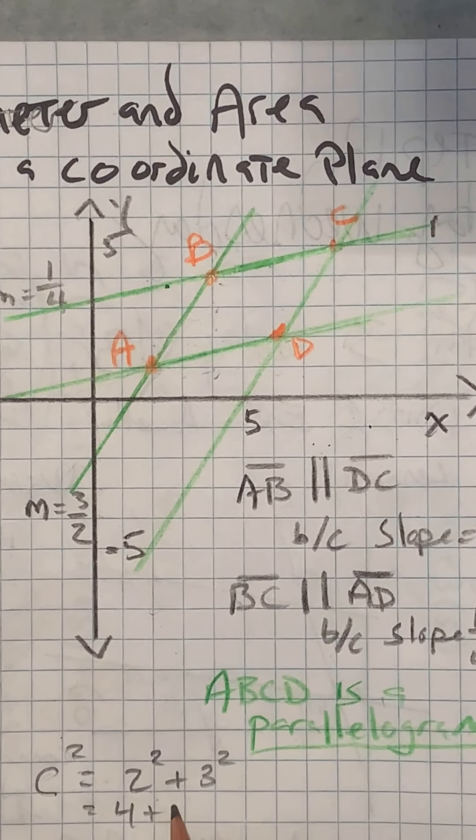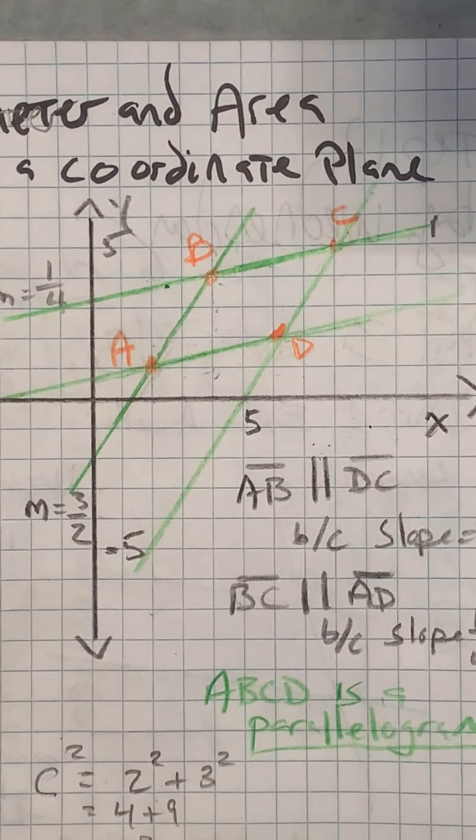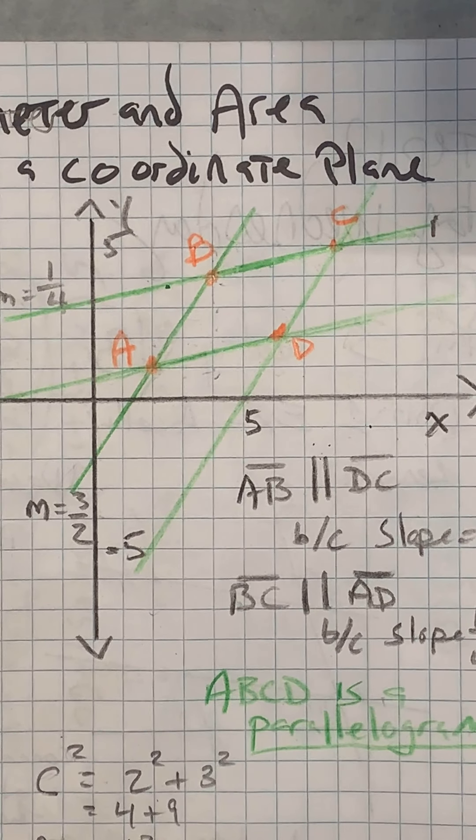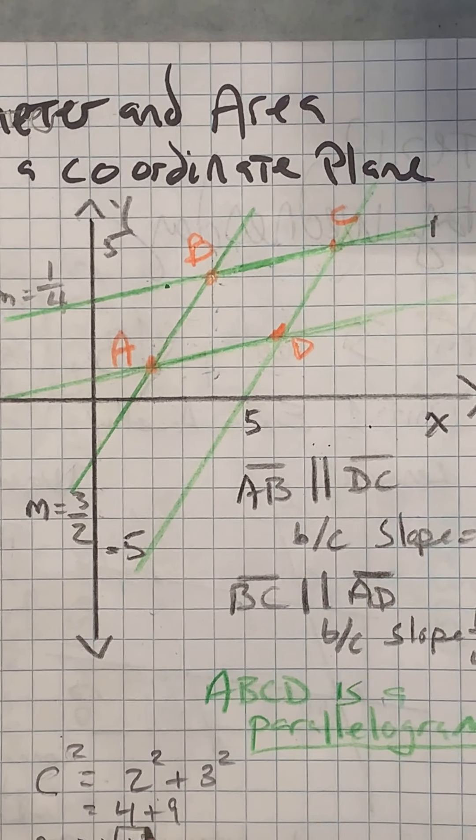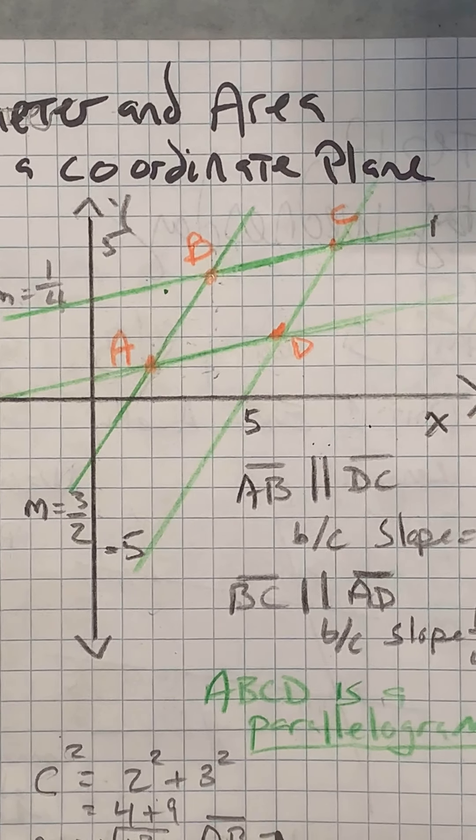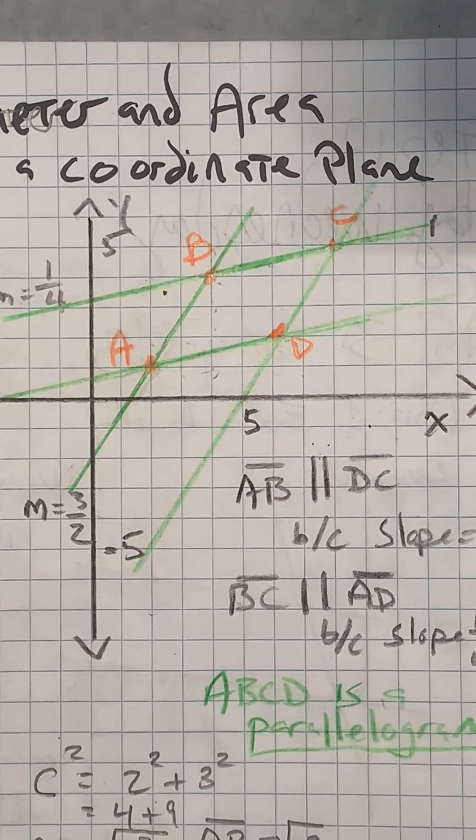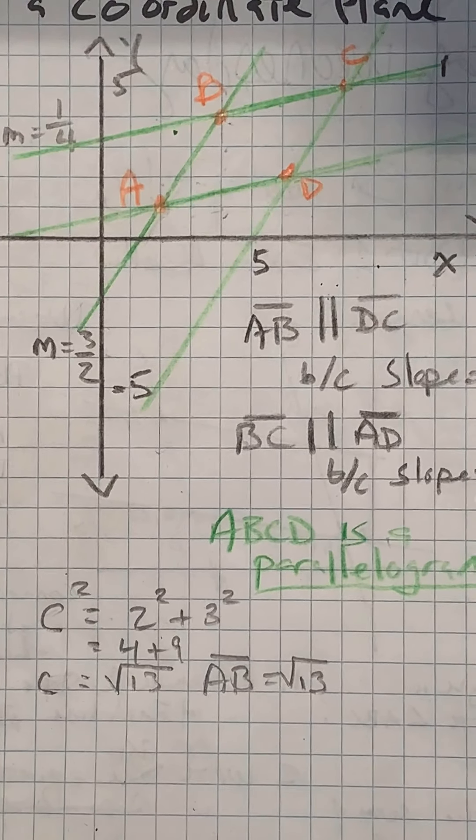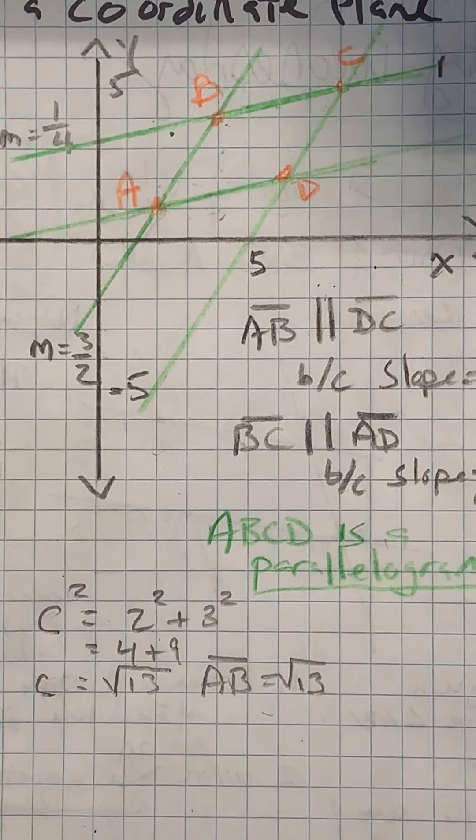So we got 4 plus 9, which is 13. That's C squared. So our C is going to be the square root of 13. So now we know that AB is equal to the square root of 13 units long.